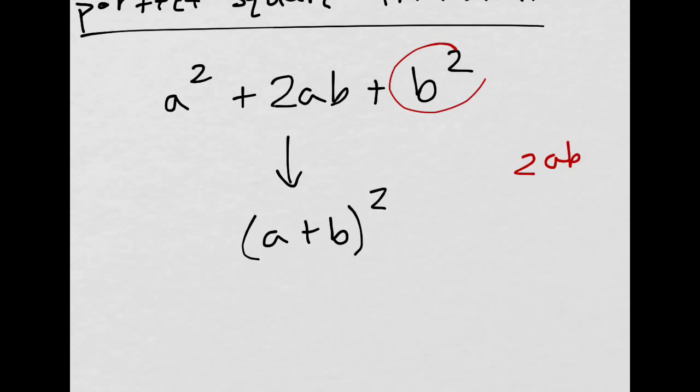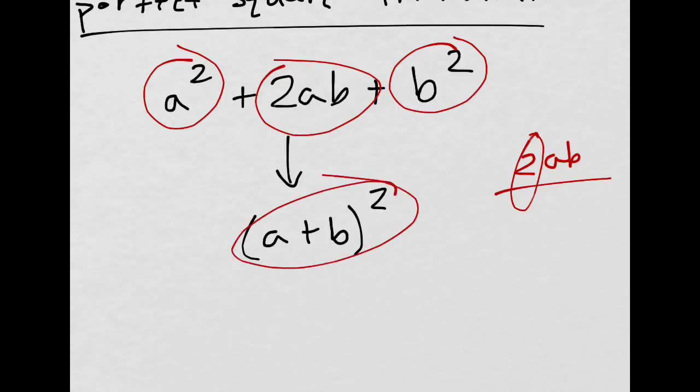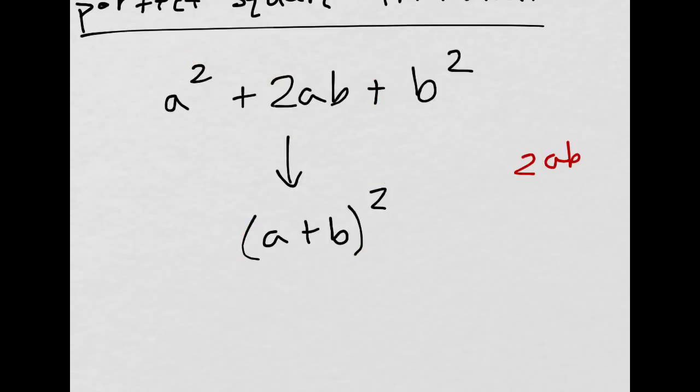You take the square root, take the square root, multiply it together, and multiply by 2. If you get the middle term, then you can immediately write it as a perfect square. And that's it.